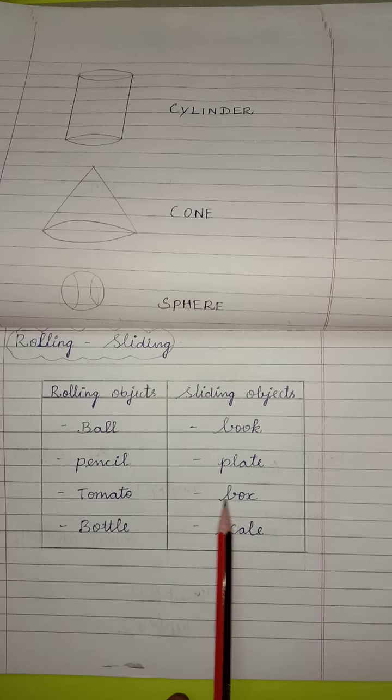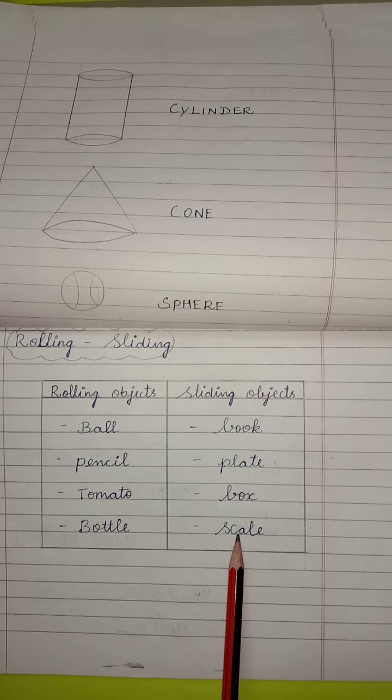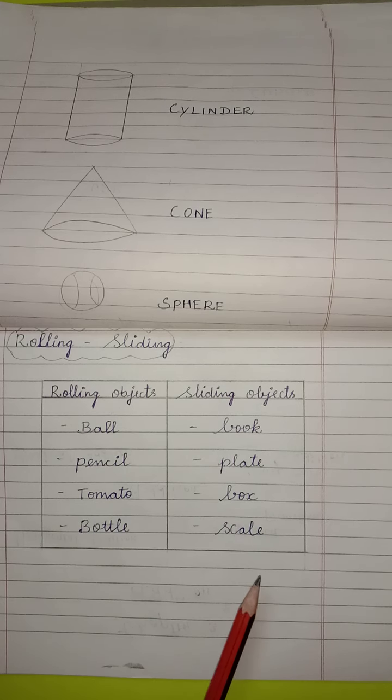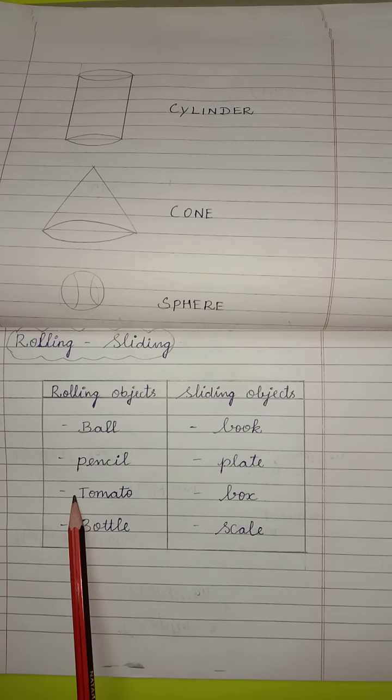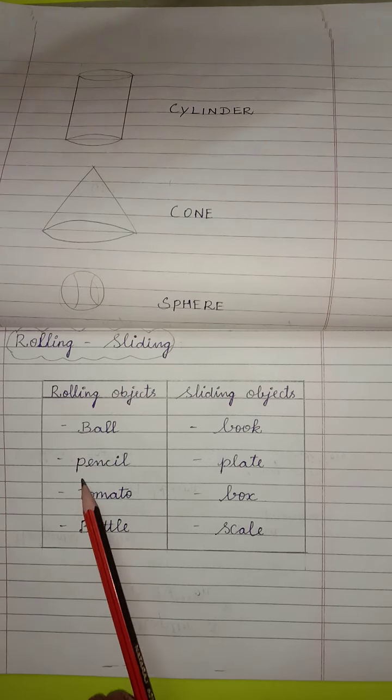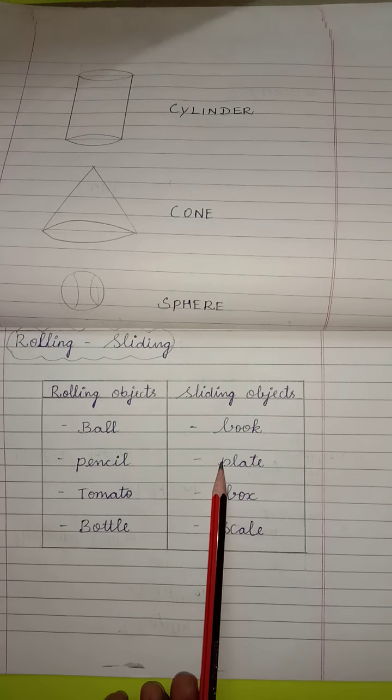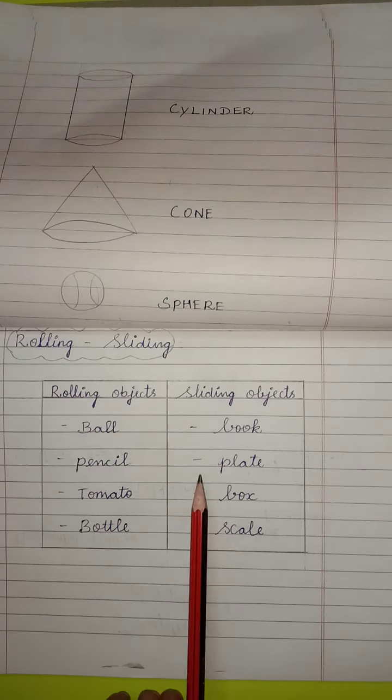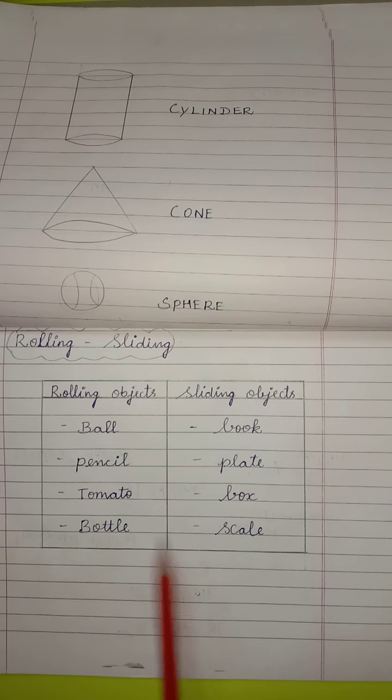B-O-X, box. S-C-A-L-E, scale. These objects are sliding objects. Rolling objects have round surface. Then, sliding objects have flat surface. Same way, you have to write neatly children.